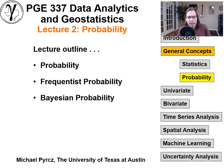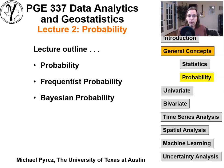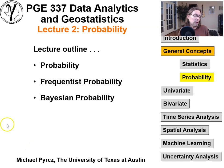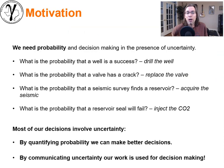Let's get into probability. We'll talk very quickly about what probability fundamentally is, then switch into frequentist probability. We'll have a bunch of Venn diagrams, talk about probability logic, and then derive our way to Bayesian probability and show how we can use Bayesian probability formulations to solve unique problems.